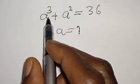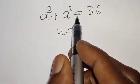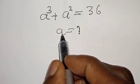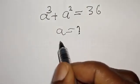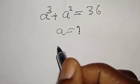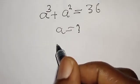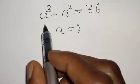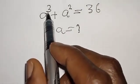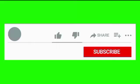A raised to power 3 plus A squared is equal to 36. Then A is equal to what? We want to find the value of A. Hi everyone, welcome to my class. In today's class, we want to find the value of A from this given equation: A raised to power 3 plus A squared is equal to 36.